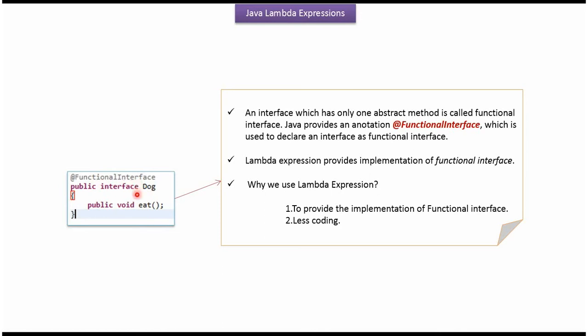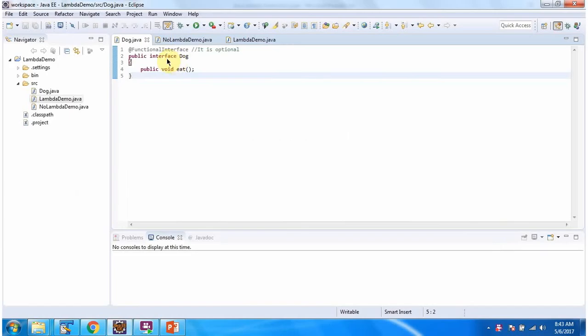Using Lambda expression, we can provide implementation of functional interface. Here I have defined the functional interface dog. It has only one abstract method called eat.